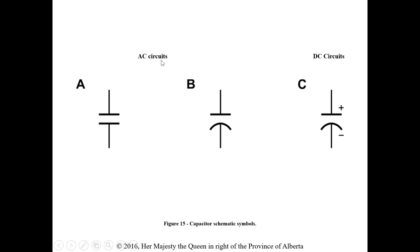Now let's talk about capacitors. In AC circuits, you won't have them marked with polarity. In DC, they are definitely polarity sensitive. If you hook up a DC capacitor to an AC circuit, it will explode — it's not meant to be reverse polarity, and an AC supply switches polarity every alternation.